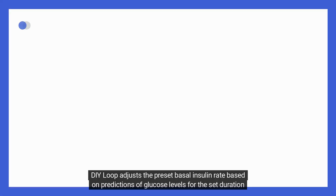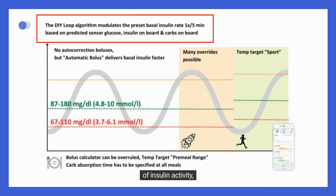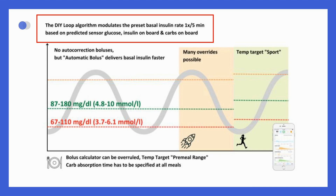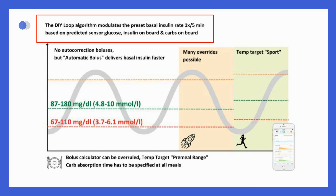DIY Loop adjusts the preset basal insulin rate based on predictions of glucose levels for the set duration of insulin activity, which is set at 6 hours by default. These predictions are calculated using multiple factors.